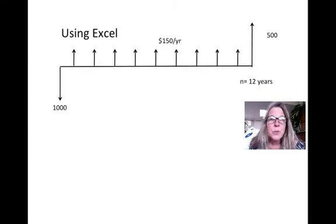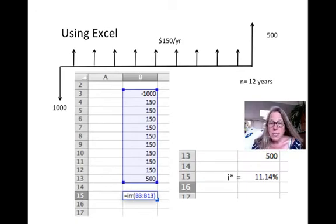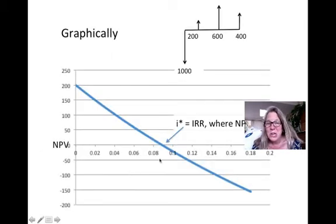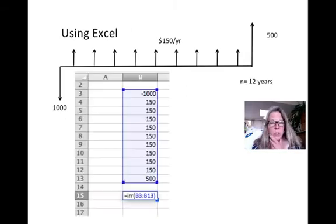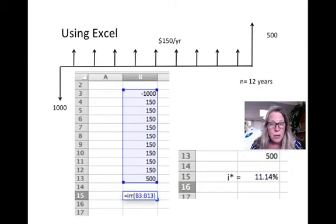For the same equation, I can also use Excel, which is the easiest method. I typed all the cash flows into Excel and used the IRR function by highlighting the range, and it gives 11.14%. The trial and error result was 11.2% because I assumed a linear relationship between the two bracketed points, but the curve is not quite linear, so there's a small error. The Excel result of 11.14% is more correct. In real life you'd use Excel, but on tests you won't have access to it, so you need to know how to do the direct solving or trial and error method.